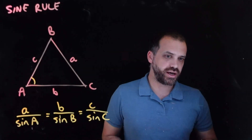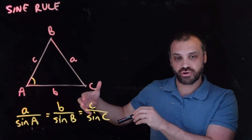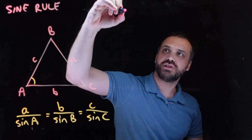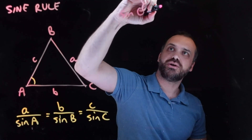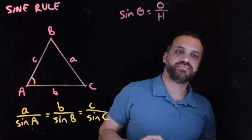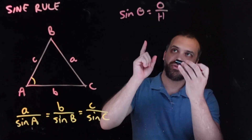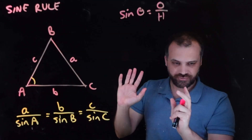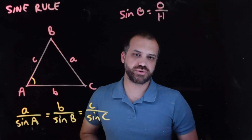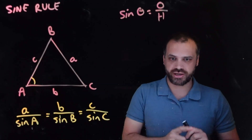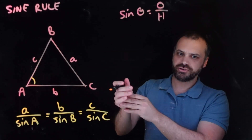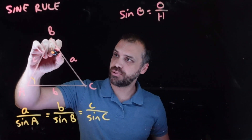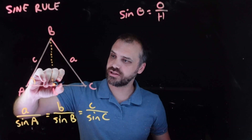It all comes from the fact that you've learned right-angle trigonometry before. In particular, you've learned that sine theta equals opposite over hypotenuse. We're going to use that fact to prove this fact — very neat. Okay, let's get into proof mode. We're going to prove it right now. Here's our triangle — we're going to construct a line.